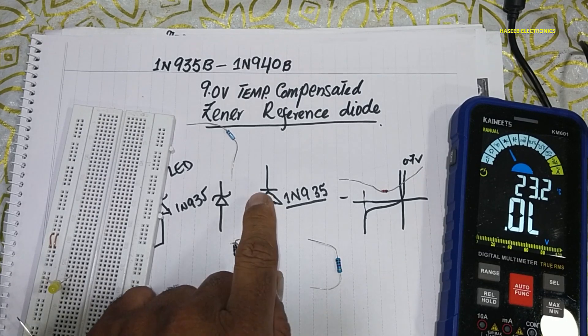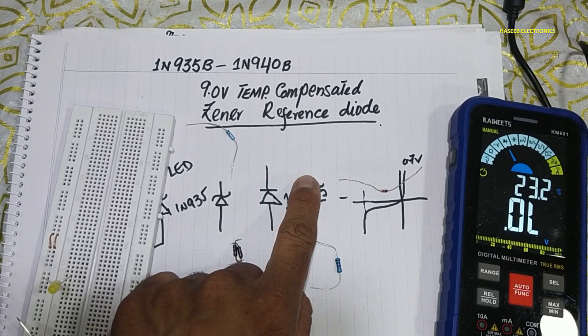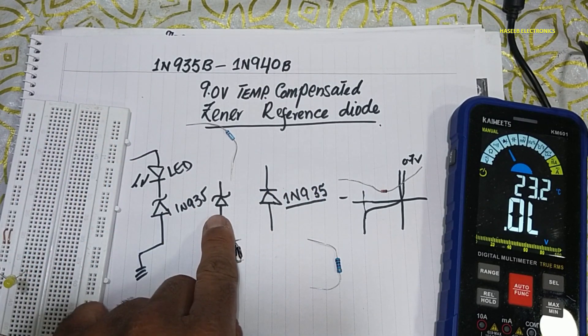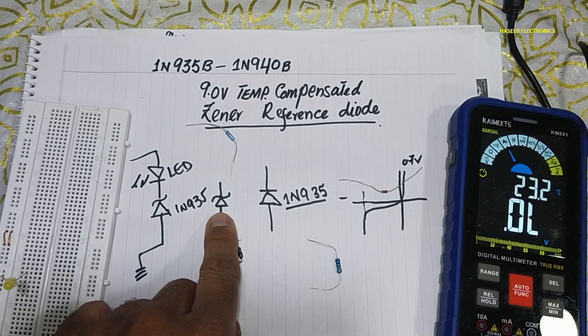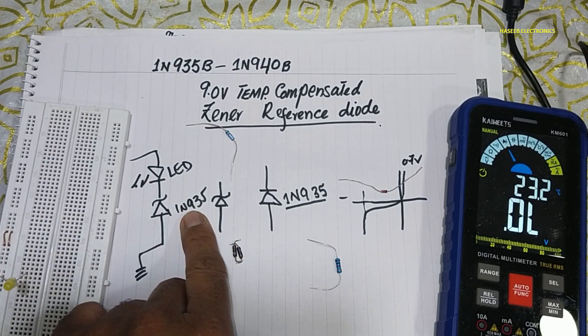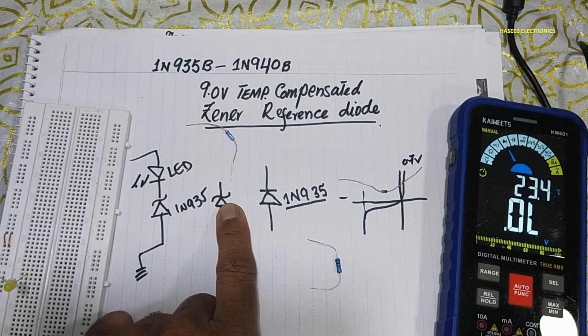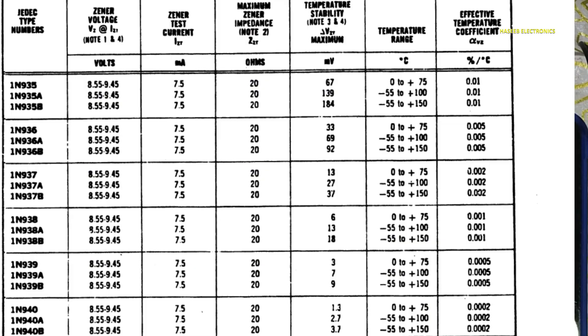And in some diagrams we can see the zener shape and number is also mentioned over there. 1N935B. Basically 1N935, that is 0 to 70 volt, 1N935A, that is minus 55 to 100 degree.